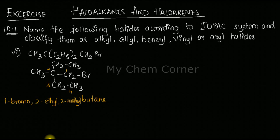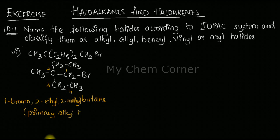Now looking at the nature of this alkyl halide: at the carbon bonded to bromine, on only one side there is an alkyl chain. Therefore this is a primary alkyl halide.